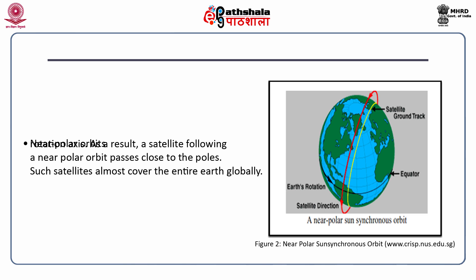Now coming to the near polar orbits. In a near polar orbit, the orbital plane is inclined at a small angle with respect to the Earth's rotation axis. As a result, a satellite following a near polar orbit passes close to the poles and almost covers the entire Earth globally. As you can see in this figure, the near polar sun synchronous orbit has been shown with three lines: the black line shows the direction of Earth's rotation, the red color shows the direction of the satellite motion, and the yellow line shows the ground track followed by the satellite. This red orbit is very close to the poles but does not follow the exact polar path, so we call them near polar orbits.